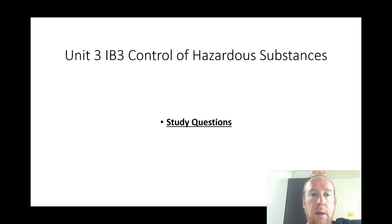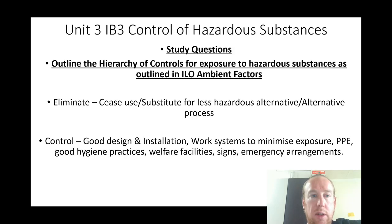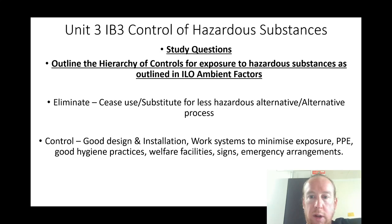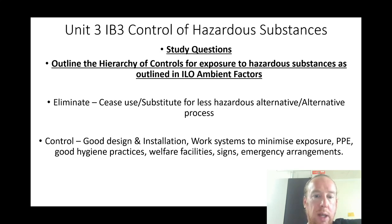Unit 3: control of hazardous substances. Outline the hierarchy of controls for exposure to hazardous substances as outlined in the ILO ambient factors. First: eliminate — cease use, substitute for less hazardous alternatives, use alternative processes. Second: control — good design and installation, work systems to minimize exposure, PPE, good hygiene practices, welfare facilities, warning signs, and emergency arrangements.